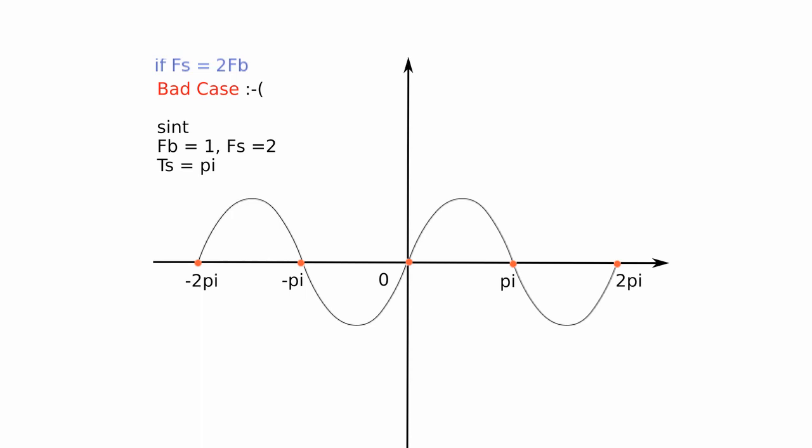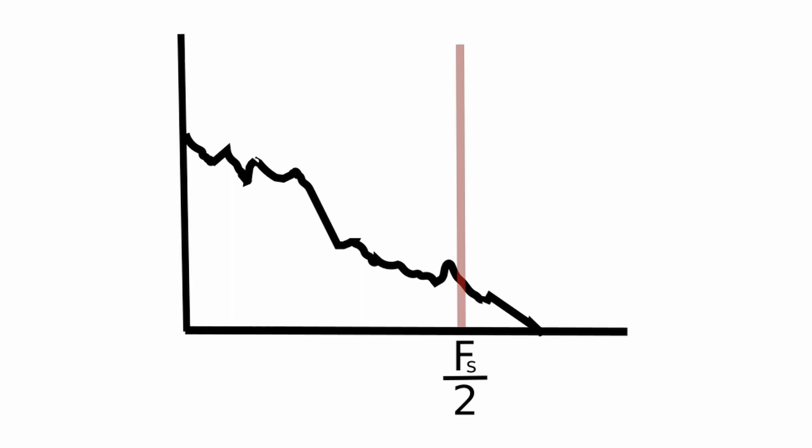To deal with aliasing, a simple strategy, if we have a fixed sampling rate, is to low-pass filter the signal using a cutoff at half the sampling frequency, removing the problem frequencies which would cause aliasing. This is called an anti-aliasing filter.